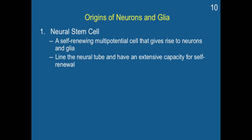We have all different types of cells in the body, and this video is going to specifically focus on the development of neurons. All cells start basically from a stem cell. A neural stem cell is a self-renewing, multi-potential cell that gives rise to neurons and glia.